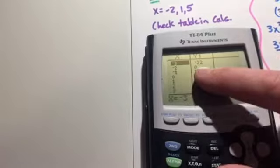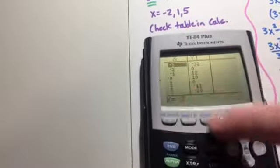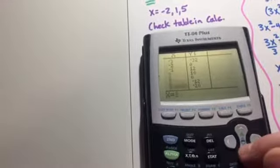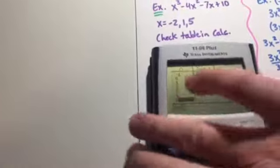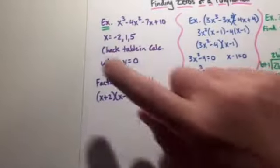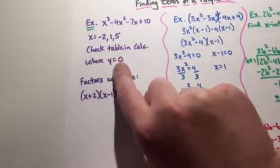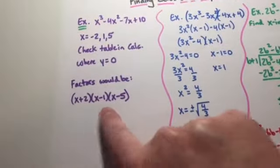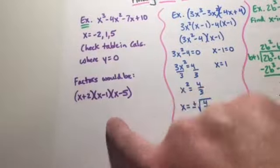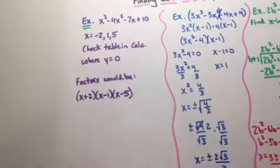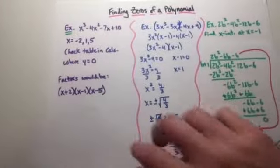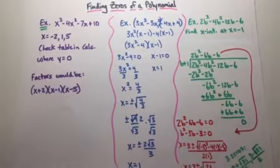So we have -2 is where y equals 0, 1, and 5. So those are really straightforward. We can just check the table. They were very exact values. They're in the table where y equals 0. If we had to write them in factored form, we could do that by just changing the sign of each one. So that type is really simple to do in the calculator.